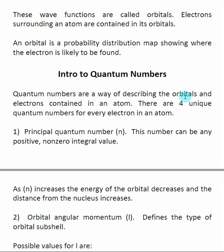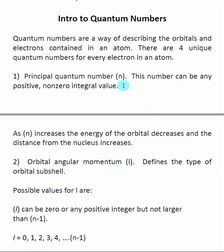The quantum numbers themselves give us a description of the orbital: what type of orbital it is, its shape, and information about the electrons contained inside. For every electron inside a particular atom, there are four unique quantum numbers that describe it. The first is called the principal quantum number, n, which can be any positive non-zero integer value. We've seen this before with the Bohr atom — the quantized stationary states for electrons. As n increases, the energy of the orbital decreases.